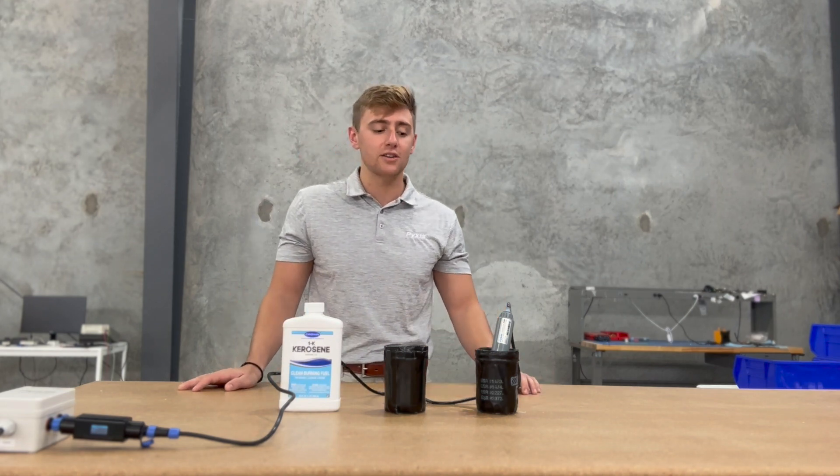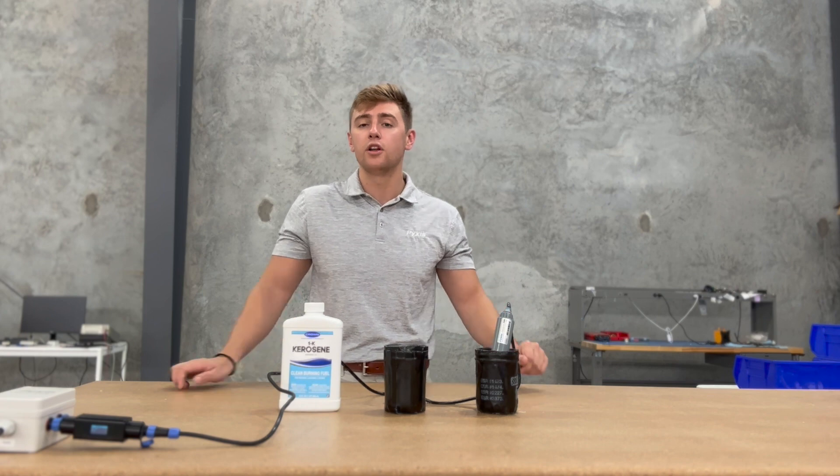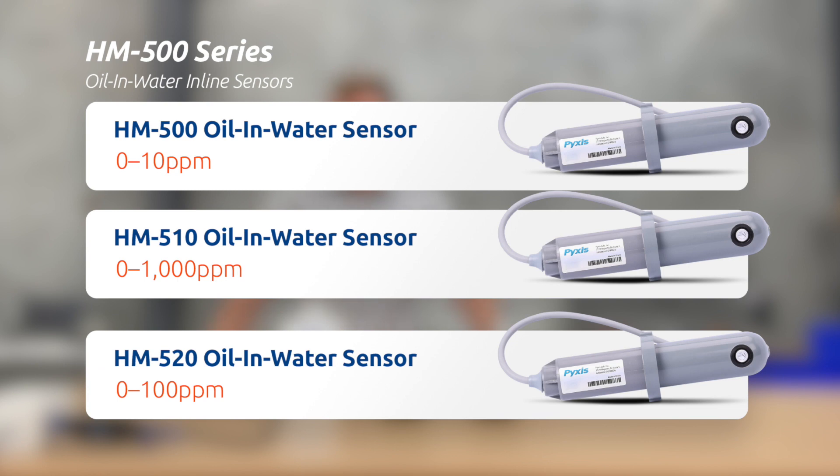So the HM series consists of the HM500 which measures at a range of 0 to 10 ppm and we have the HM510 which measures at a range of 0 to 1000 ppm and the HM520 is 0 to 100 ppm all measuring for oil and water concentration.